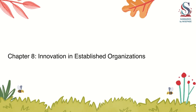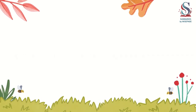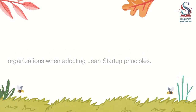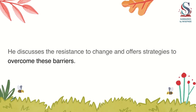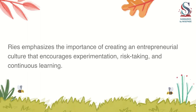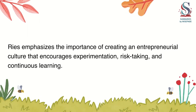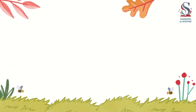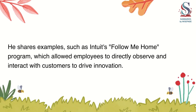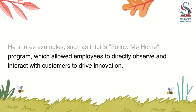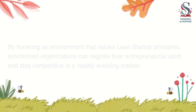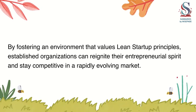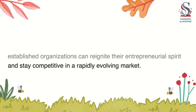Chapter 8: Innovation in Established Organizations. Ries addresses the challenges faced by established organizations when adopting Lean Startup principles. He discusses the resistance to change and offers strategies to overcome these barriers. Ries emphasizes the importance of creating an entrepreneurial culture that encourages experimentation, risk-taking, and continuous learning. He shares examples, such as Intuit's Follow Me Home program, which allowed employees to directly observe and interact with customers to drive innovation. By fostering an environment that values Lean Startup principles, established organizations can reignite their entrepreneurial spirit and stay competitive in a rapidly evolving market.